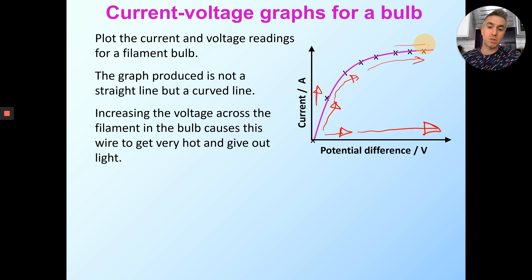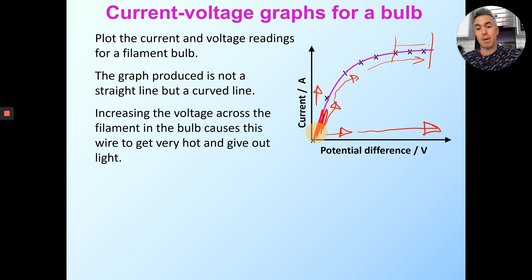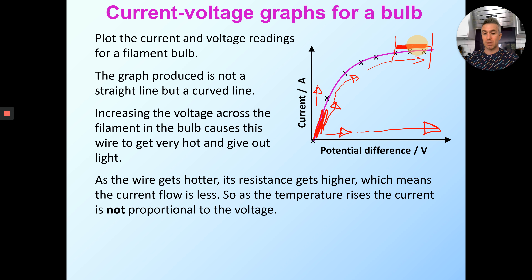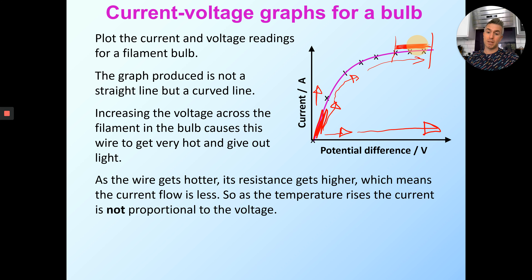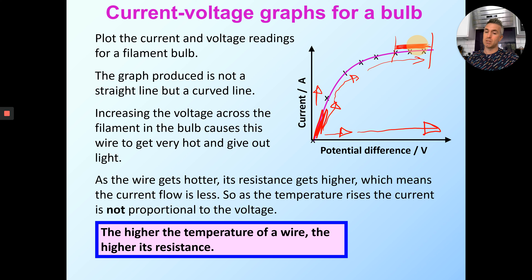I'm putting loads more potential difference but getting hardly any current, because in this section the wire is so hot the atoms are vibrating so much the electrons can't get down. So the resistance has gone from quite low at the start to really high at the top, because the current has made the wire so hot. So as the wire gets hotter, its resistance gets higher, which means less current can flow. A bulb is very much not a straight line graph — that's how you know it's a bulb. The higher the temperature, the higher the resistance.